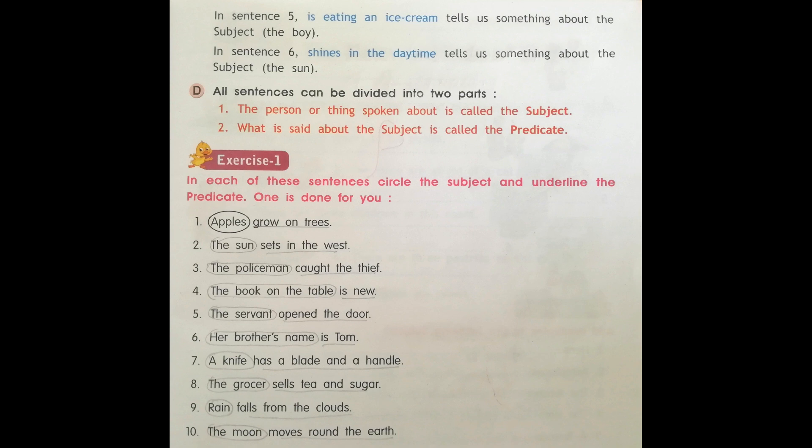Number six: Her brother's name is Tom. Her brother's name is the subject. Is Tom is the predicate.